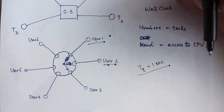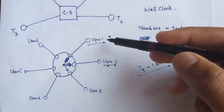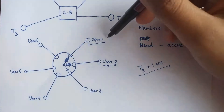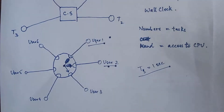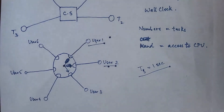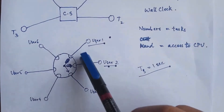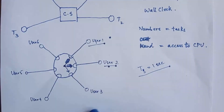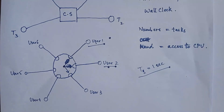User 1 gets a time quantum of 1 second, then user 2, then user 3, user 4, and it goes on — but in reality the time quantum is very small so that each user feels they have a dedicated CPU. Even though there is only one CPU, all users feel they have their own CPU. Each user is supplied with a very small time slot, and as soon as it expires the CPU is allocated to the next user in the queue — just like a clock where the numbers represent users or tasks and the hand represents CPU allocation.